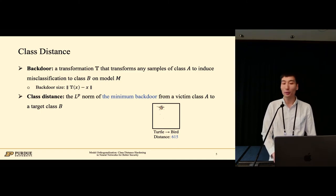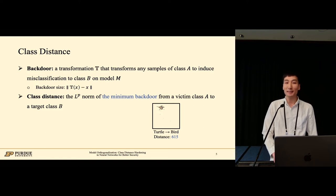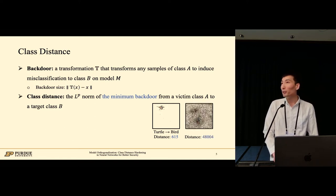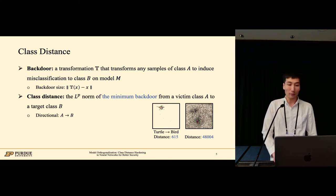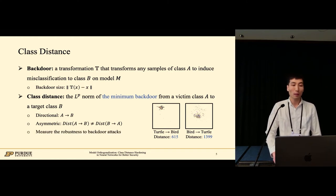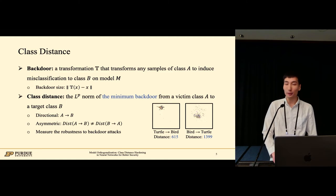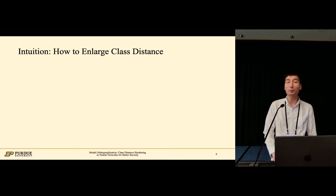This is a trigger from turtle to bird. It is the minimum backdoor, and hence the class distance. We can also generate a much larger trigger, which cannot be considered as the distance. The distance is directional, and it can be different for the two directions. The distance from bird to turtle is different and much larger than the other direction. The class distance hence measures the robustness to backdoor attacks. Here, we study how to enlarge class distance for improved model robustness.